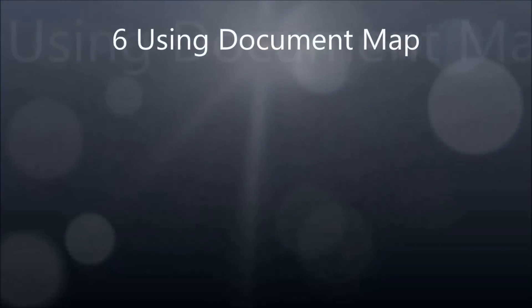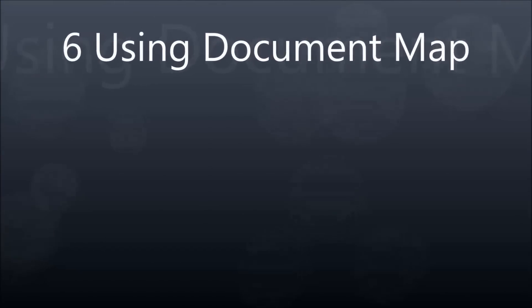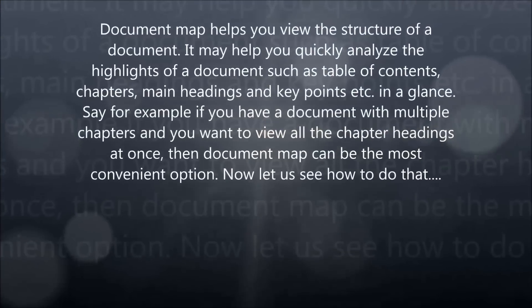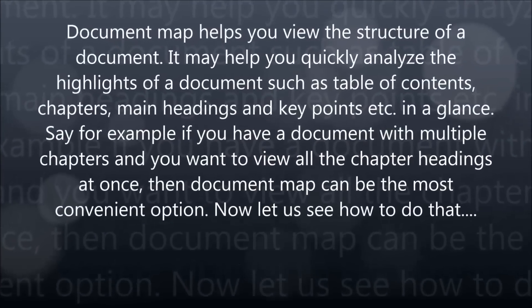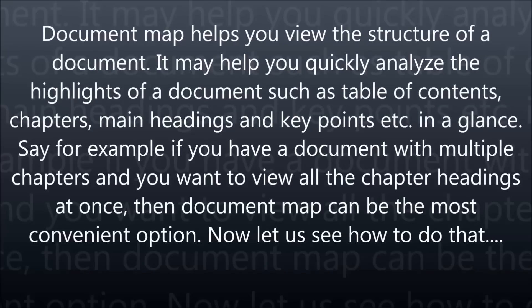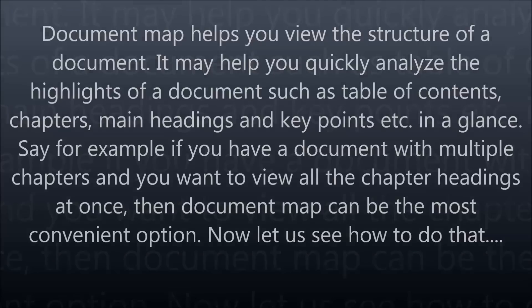Number 6: Using Document Map. Document Map helps you view the structure of a document. It may help you quickly analyze the highlights of a document such as table of contents, chapters, main headings, and key points at a glance. For example, if you have a document with multiple chapters and you want to view all the chapter headings at once, then Document Map can be the most convenient option.